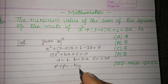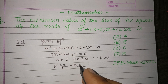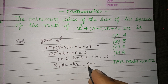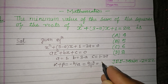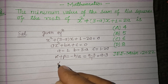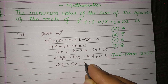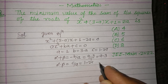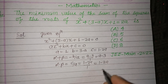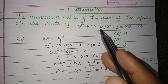The sum of the roots α + β = -b/a = -(3 - a)/1 = a - 3. The product of the roots α·β = c/a = (1 - 2a)/1 = 1 - 2a.